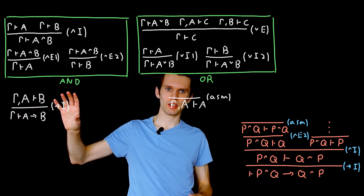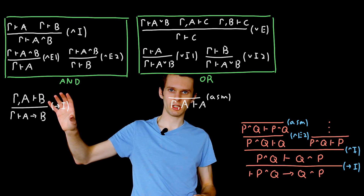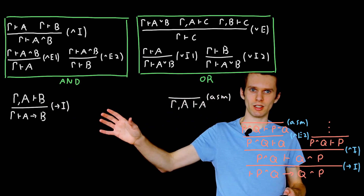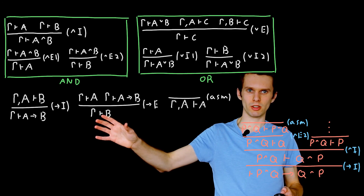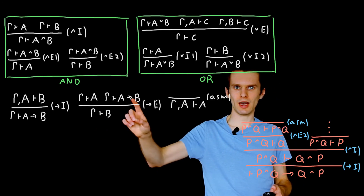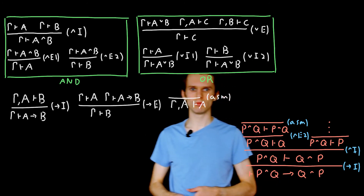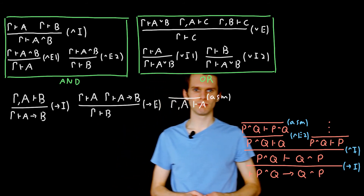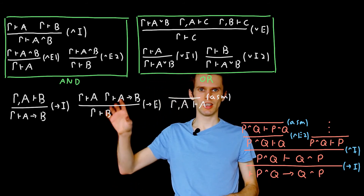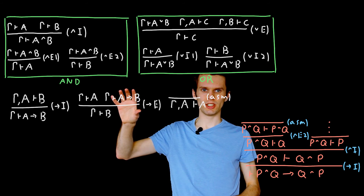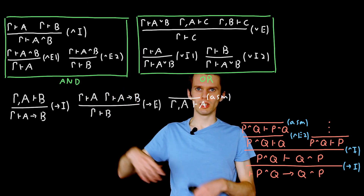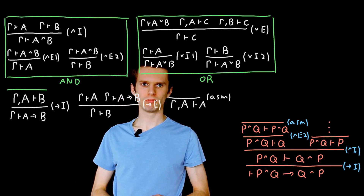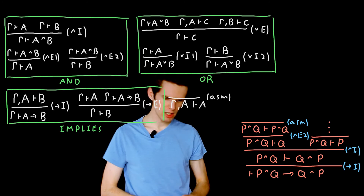Unsurprisingly, given that we have an introduction rule for implication, we also want an elimination rule. If we can show A implies B is true, and we can also show A is true, then we can show B is true. In the if-then reading: if A is true, then we have 'if true, then something,' and we can simply show B. This gives us our complete implication rules.